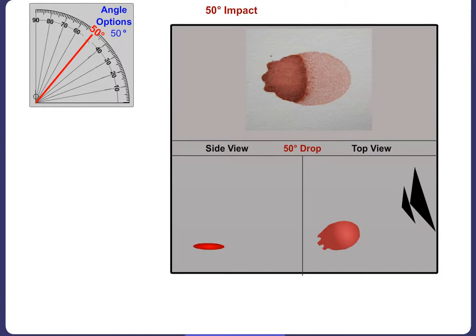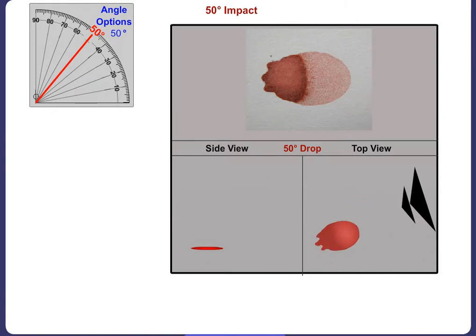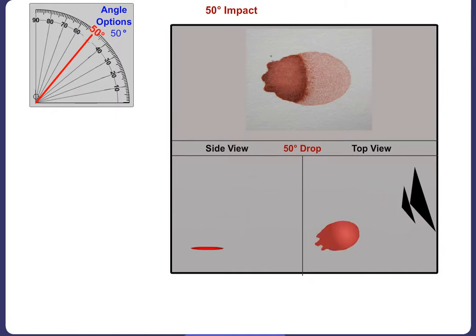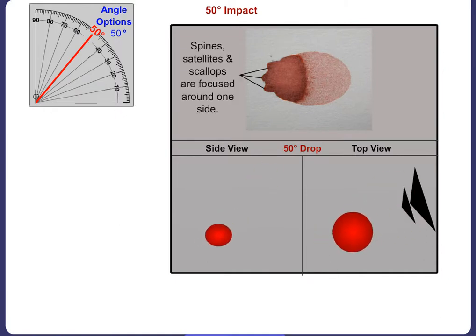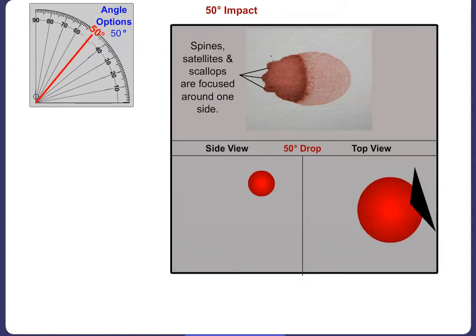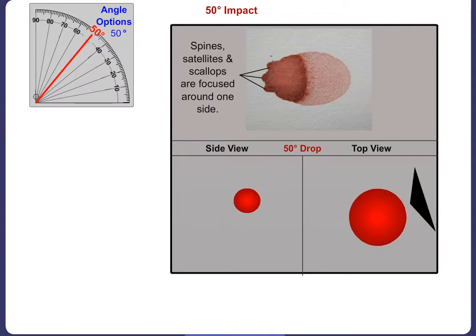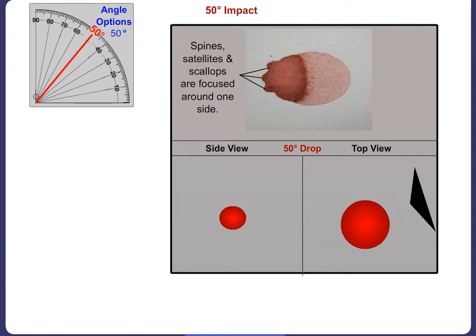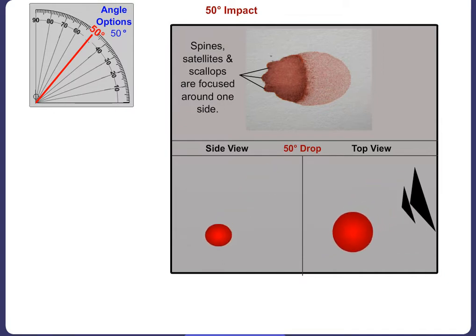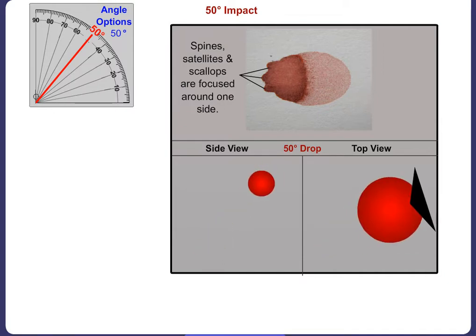The elongation of a blood stain becomes more apparent when the angle of impact is 50 degrees. The stain's spines, satellites and scallops focus on the side opposite the angle of impact. Directionality from right to left is starting to become more evident.